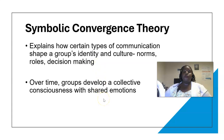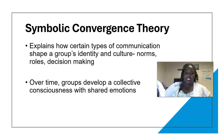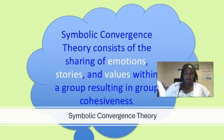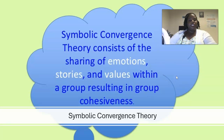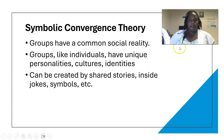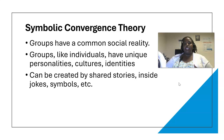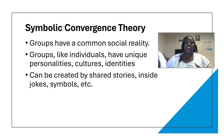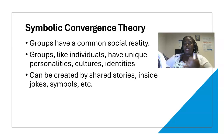Over time, the group develops a shared consciousness and shared emotions, especially as you go along the process. Symbolic convergence theory consists of sharing of emotions, stories, and values within a group resulting in group cohesiveness. Because you're in this class together, you have a common social reality — you combine your unique personalities and identities to share stories, inside jokes, and symbols within the group.